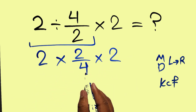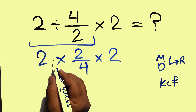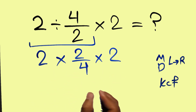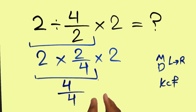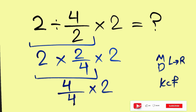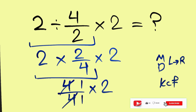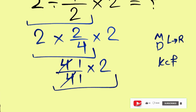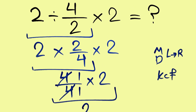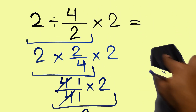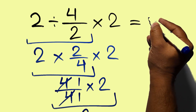2 times 2 over 4 times 2. First this multiplication: 2 times 2 over 4 equals 4 over 4. Then times 2. 4 over 4 is just 1. So 1 times 2 gives us 2. And this is our final answer to this problem. The correct answer is 2.